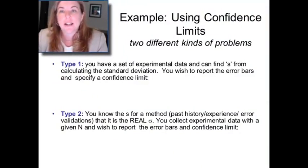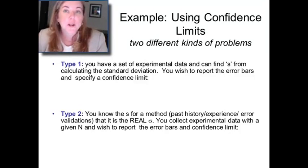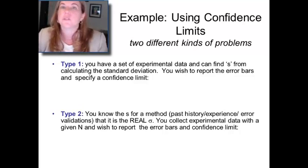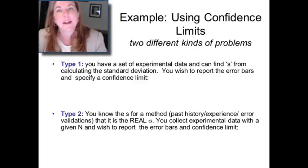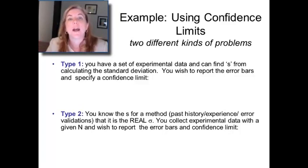There are two different ways you might find yourself using confidence limits. In one way, you have an experimental set of data, you find the standard deviation, and you wish to report the error bars and tell your readers what the confidence limits are — a higher-level description of error. In the other case, you might be given the standard deviation of a method, which is effectively its real sigma from hundreds or thousands of measurements. And you want to know: I don't need my error to be that good, I don't have time to do 1,000 measurements — what if I did 10? How good will I be? Another way of using confidence limits is to flip it and calculate how many measurements you have to make in order to achieve a certain level of precision.